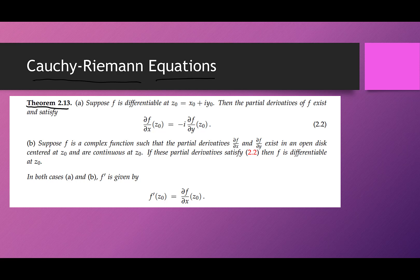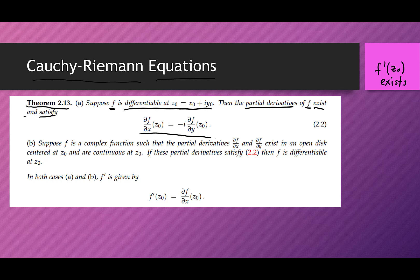Part A says the following: suppose F is differentiable at Z naught — that means F prime of Z naught exists. Then the partial derivatives of F, if we think about F in terms of a two-variable function of X and Y, exist and satisfy the following equation: the partial with respect to X is equal to minus i times the partial with respect to Y.